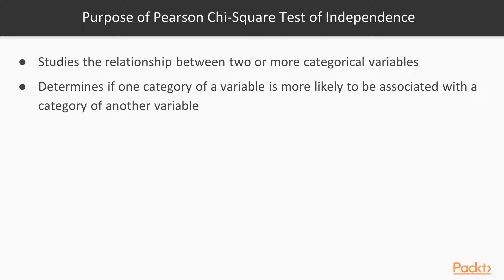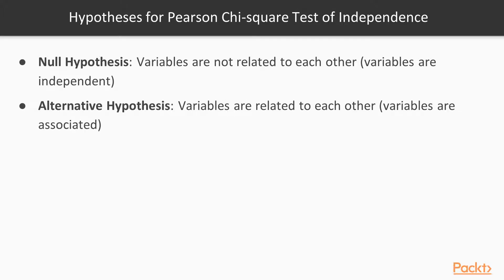For the Pearson chi-square test of independence, there are always two hypotheses. The null hypothesis states that the variables are not related — that the variables are independent. For example, if comparing males and females on whether they purchased product A, the null hypothesis would be that there is no relationship between gender and purchase behavior. The alternative hypothesis states that the variables are related, associated, and dependent on each other — for example, that males are more likely to purchase product A than females.